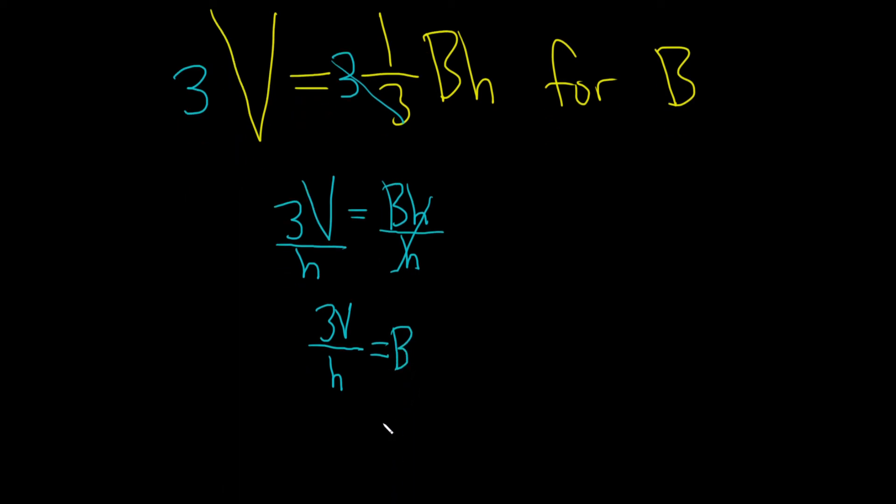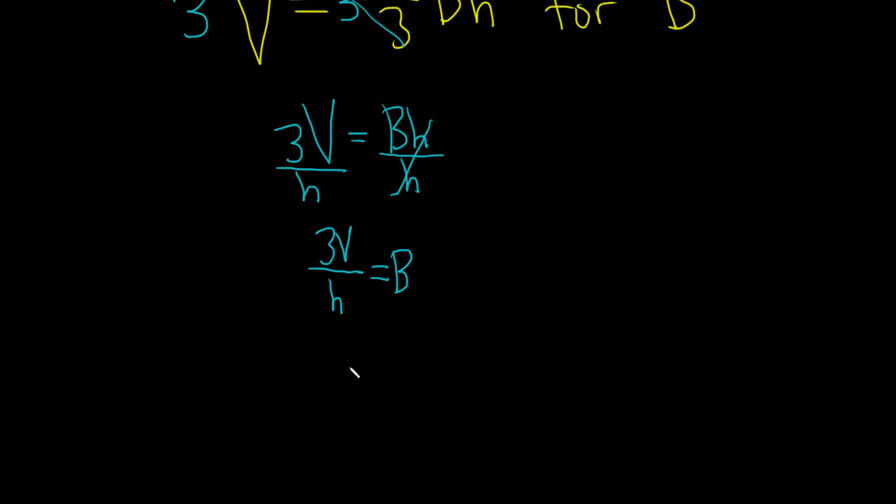Maybe as a good last step, we can write it backwards. So this is really b equals 3v over h. Just read it backwards. And that would be the final answer. I hope this video has been helpful. Good luck.